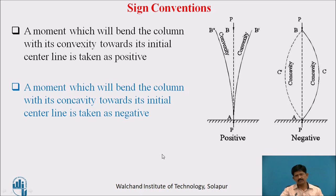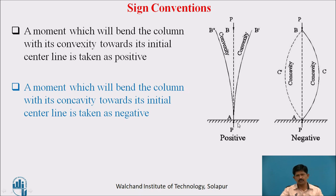Sign convention: A moment which will bend the column with its convexity towards the initial position is taken as positive. A moment which will bend the column with concavity towards the initial position is taken as negative.